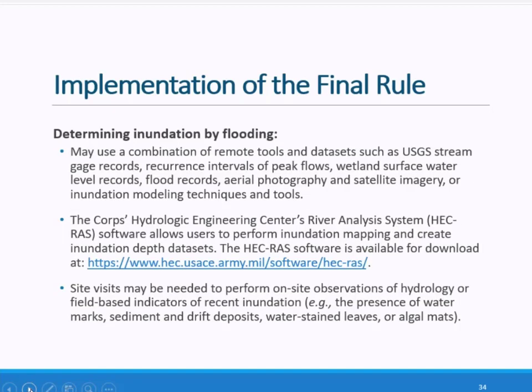A lake, pond, or impoundment of a jurisdictional water may meet the definition of a water of the United States if it is inundated by flooding from a jurisdictional water in a typical year. Similarly, a wetland that is inundated by flooding from a jurisdictional water in a typical year is an adjacent wetland under the final rule. In order to determine whether inundation by flooding occurs in a typical year, the agencies may use a combination of remote tools and datasets such as USGS stream gauge records, recurrence intervals of peak flows, wetland surface water level records, flood records, aerial photography and satellite imagery, or inundation modeling techniques. One example is the Corps' Hydrologic Engineering Center's River Analysis System, or HECRAS, software, which allows users to perform two-dimensional hydraulic calculations for natural and constructed channels.